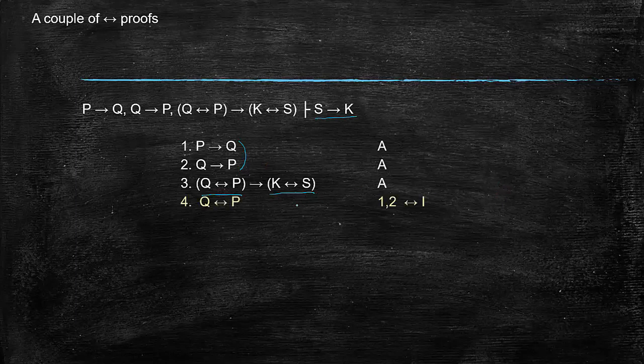So the proof of this is straightforward. We just write Q if and only if P by 1 and 2, biconditional introduction, putting these two together. And then we just use conditional elimination to get K if and only if S. And then finally we get if S then K by 5 and biconditional elimination. Very straightforward.